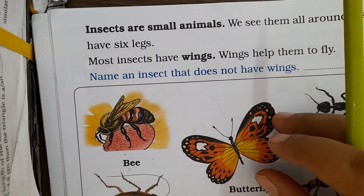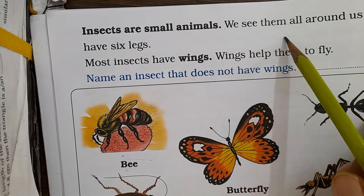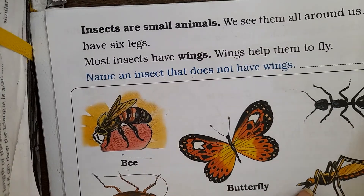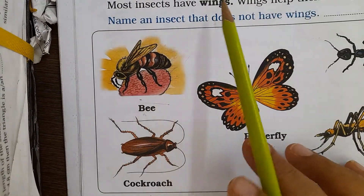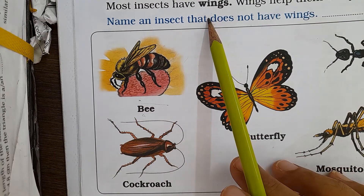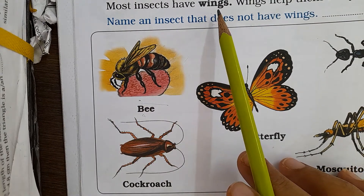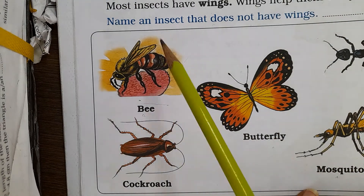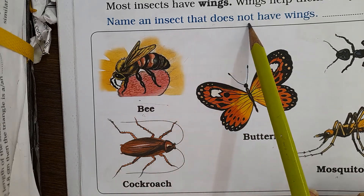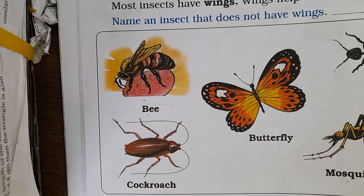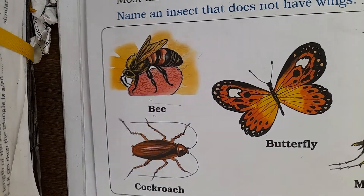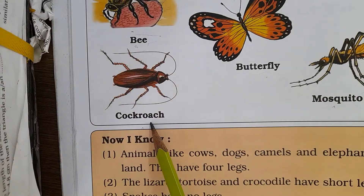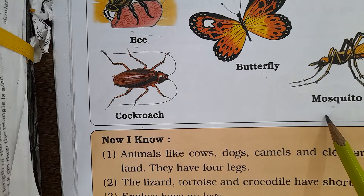Insects are very small animals. We see them all around us. They have 6 legs — insects have 6 legs. Most insects have wings, and wings help them to fly. Name an insect that does not have wings — ants sometimes have wings. Here are some insects: bees, butterfly, ant, cockroach, and mosquito.